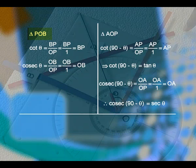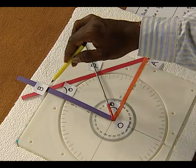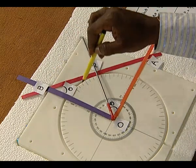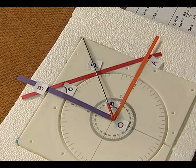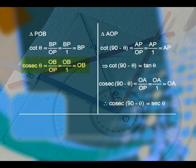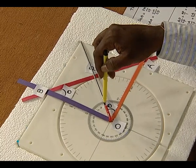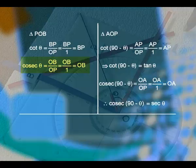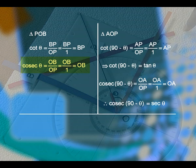Now, in triangle P, O, B, theta is here. We know that cot theta is equal to adjacent side by opposite side. So, the adjacent side is BP and the opposite side is OP, which equals BP by 1, equal to BP. Now, we see cosecant theta. In the same triangle B, P, O, cosecant theta is equal to OB by OP, equal to OB by 1, equal to OB.